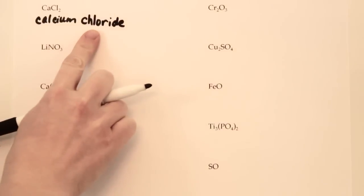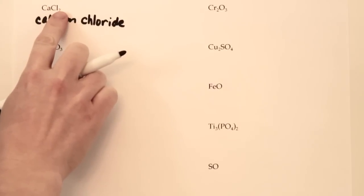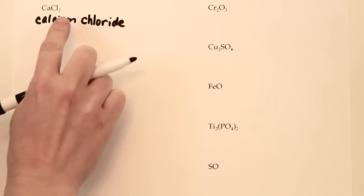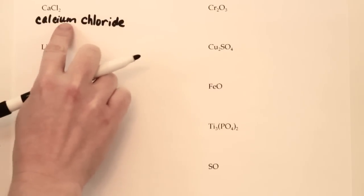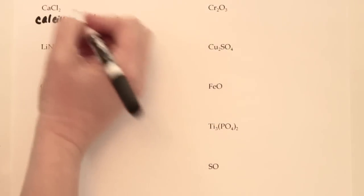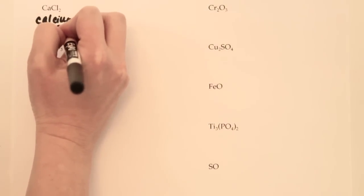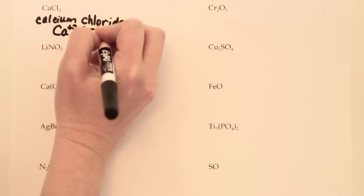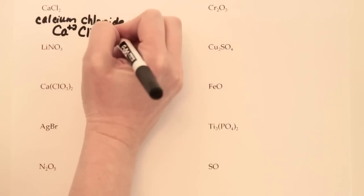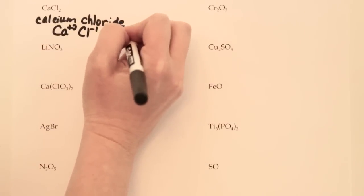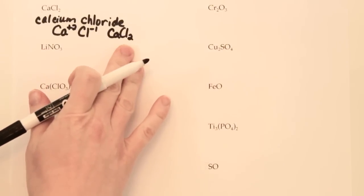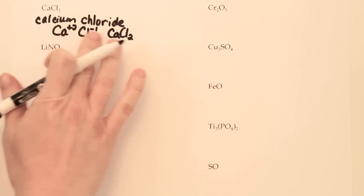A lot of people worry how would someone know there are two chlorines unless they say 'dichloride.' Be careful not to add prefixes when they're not necessary. If you had the words 'calcium chloride' you could figure out there were two chlorines because calcium has a charge of plus 2 and chloride has a charge of minus 1. So plus 2, minus 1 — it makes the formula CaCl₂. It's not necessary to say dichloride.